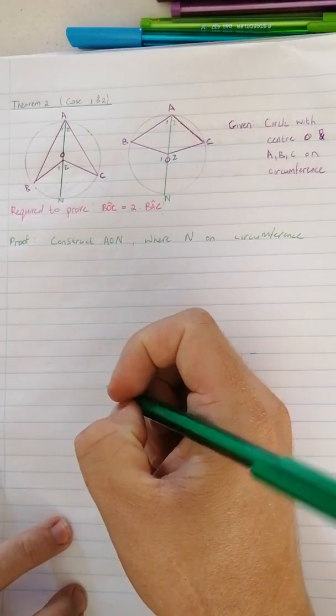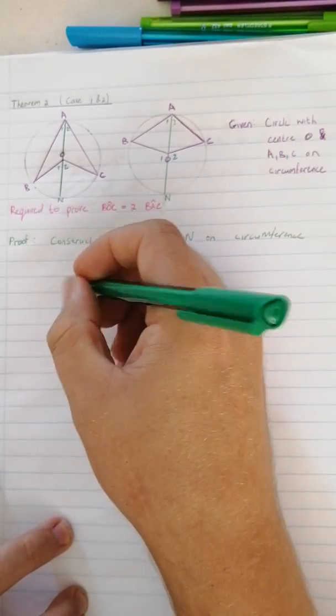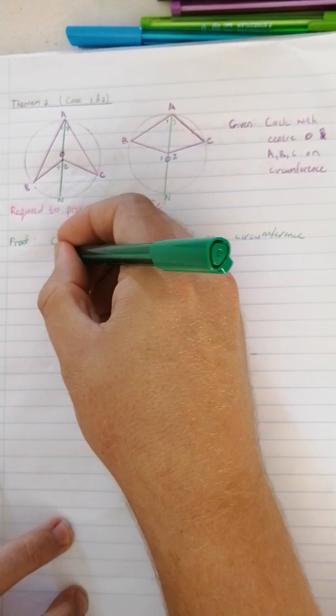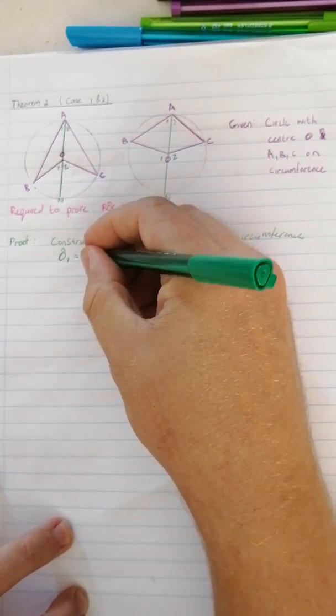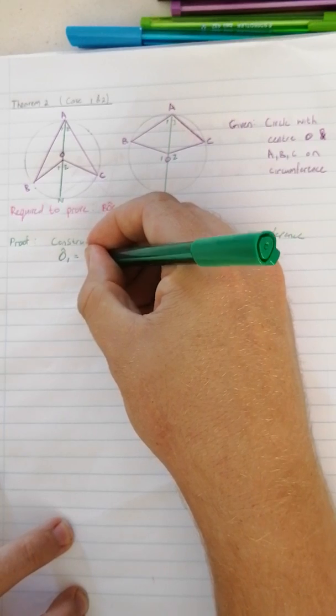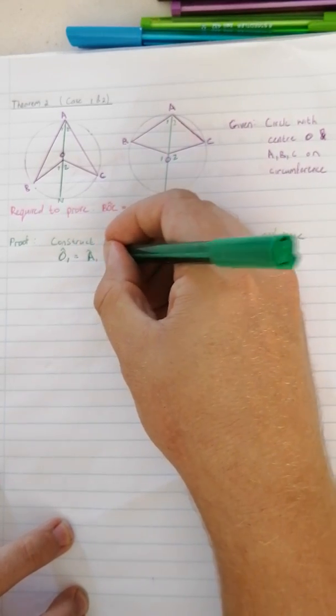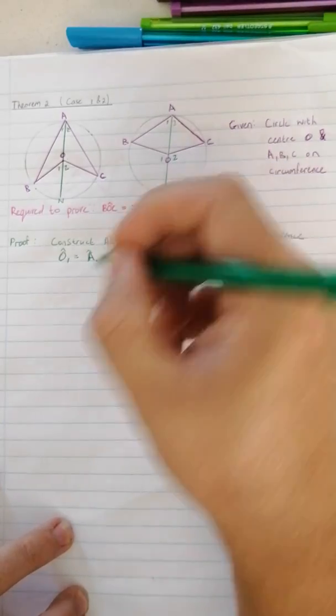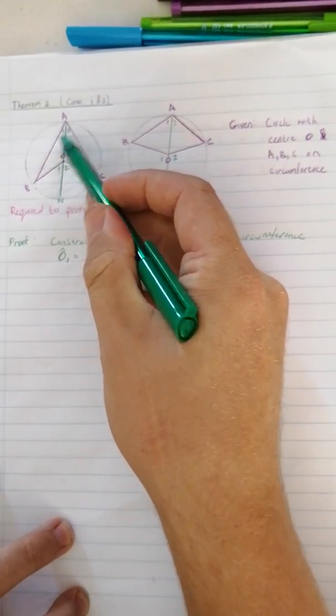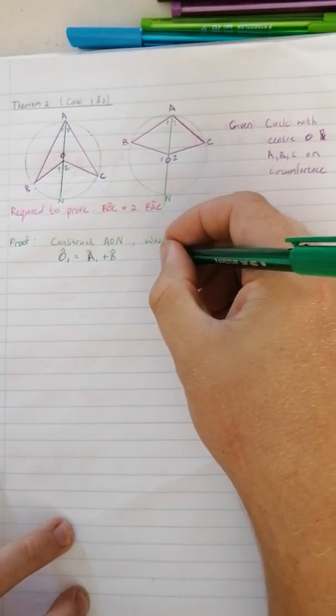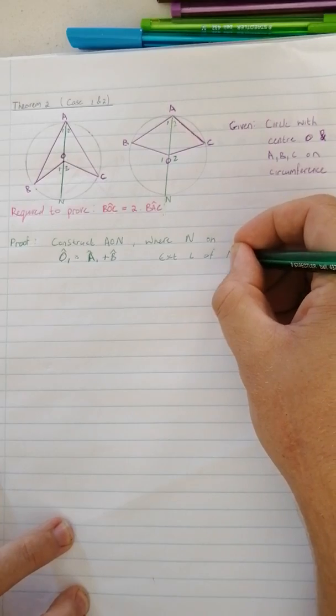Okay now we can start. Immediately like I said we're going to use exterior angles. So angle O1 equals A1 plus B because we know that exterior angles equals the sum of the opposite interior angles. So that is exterior angle of a triangle.